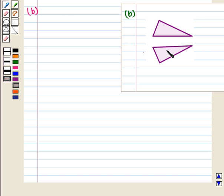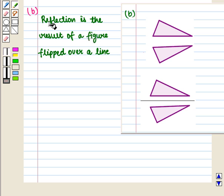Now we consider the second figure. Here we can clearly see that the two figures are mirror images of each other. And we know that reflection is the result of a figure flipped over a line.